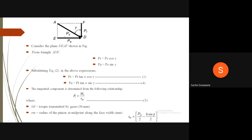Considering the plane DEAF: from triangle ADF, PR = PS·cos(gamma) and PA = PS·sin(gamma). Substituting Equation 2: PR = PT·tan(alpha)·cos(gamma) (Equation 3), and PA = PT·tan(alpha)·sin(gamma) (Equation 4).